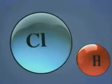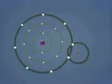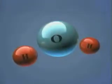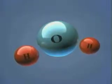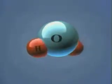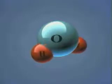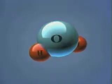Hydrogen can also form a covalent bond with chlorine, which has seven electrons in its outermost energy level. When they bond, both of their outermost energy levels become complete. Water, one of the most common substances on Earth, consists of a covalent bond formed between two hydrogen atoms and one oxygen atom.